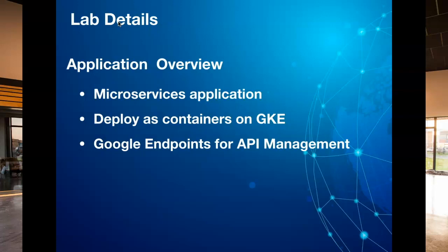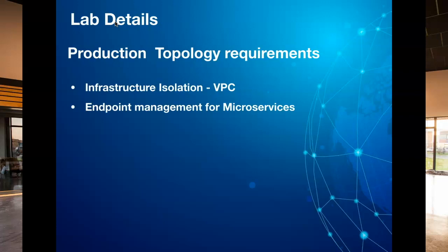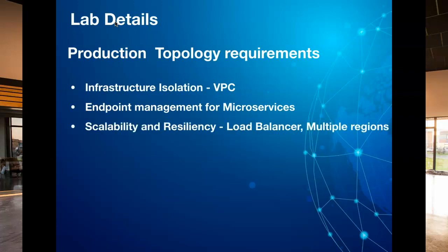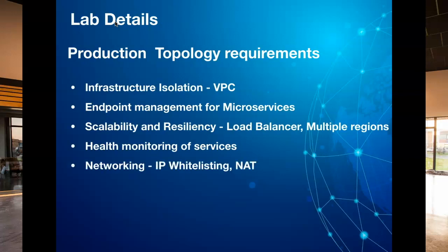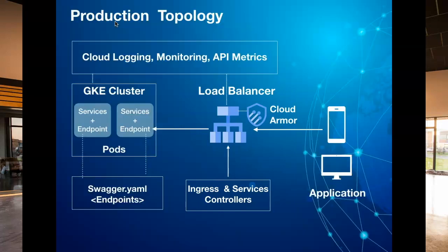To build a production grade environment you need a host of components like virtual private network, endpoint management for microservices, load balancer to balance requests over various protocols, configure SSL, health monitoring of services, network configuration like whitelisting of IPs, network address translation for outbound connections, and ensuring logging and security at various points in our application. As part of the configuration we will also create an ingress controller of type load balancer and expose our application microservices over secured HTTP protocol.